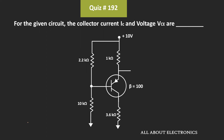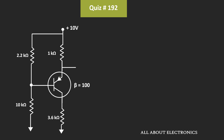Hey friends, welcome to the YouTube channel all about electronics. In this circuit, we have been asked to find the collector current IC and the voltage VCE. If you notice, this transistor is a PNP transistor because the arrow is going inverse. That means this terminal is the emitter terminal, while the other two terminals are the base and the collector. This transistor is biased in the voltage divider biasing configuration.